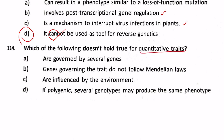Next question: which of the following doesn't hold true for quantitative traits? Quantitative traits are governed by several genes, are influenced by the environment, and if polygenic, several genotypes may produce the same phenotype — all true. However, the statement that genes governing the trait do not follow Mendelian laws is false, because they do follow Mendelian laws. So answer B is correct.